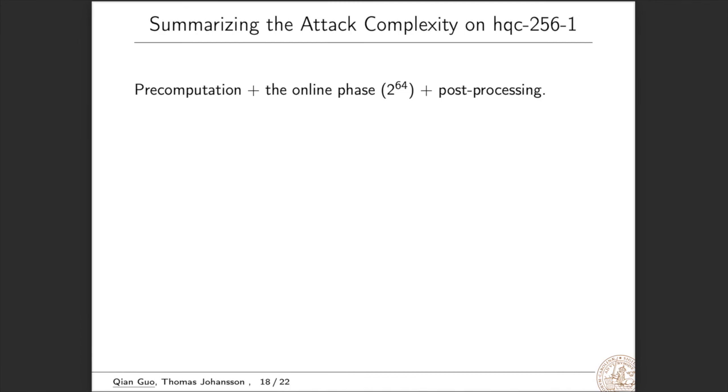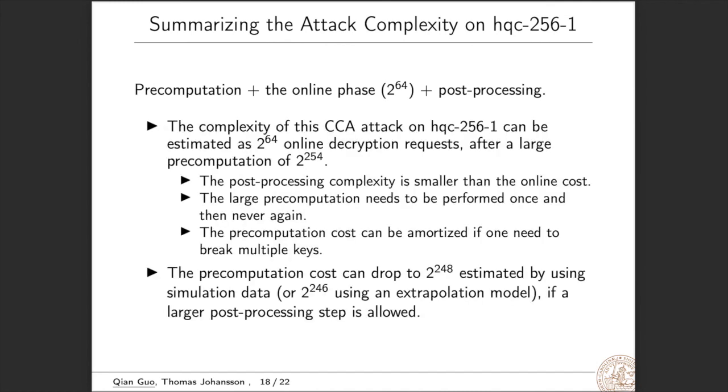We now summarize the attack complexity on HQC 256-1. The cost includes the cost of pre-computation, the cost of submitting 2260 chosen ciphertexts in the online phase, and also the cost of post-processing. We see that the complexity of this attack can be controlled as 2 to 64 online decryption requests after a large pre-computation of 2 to 254.